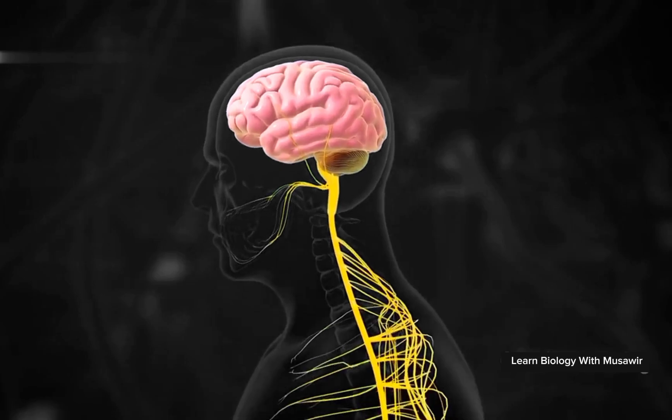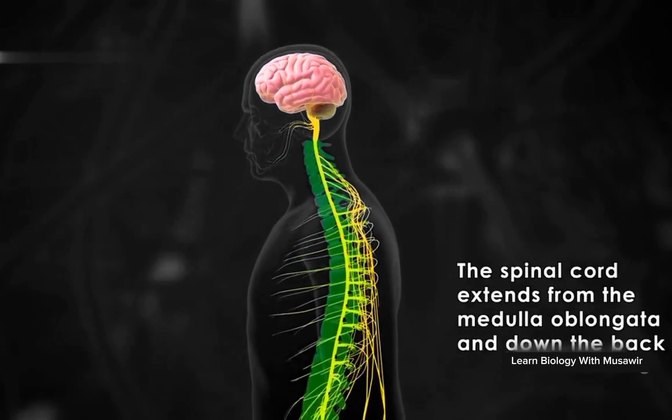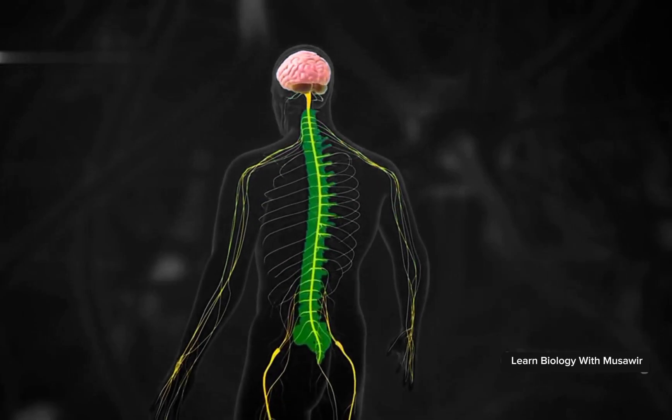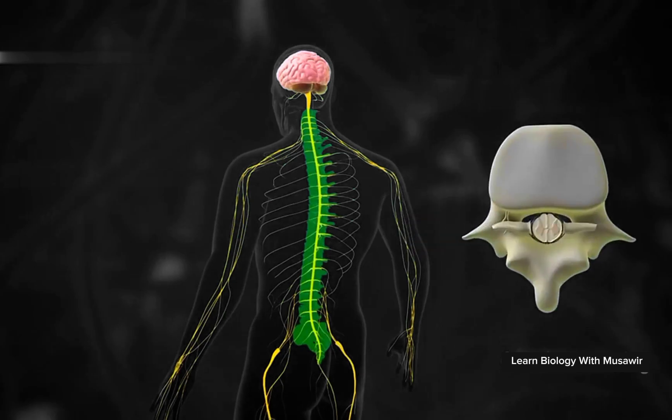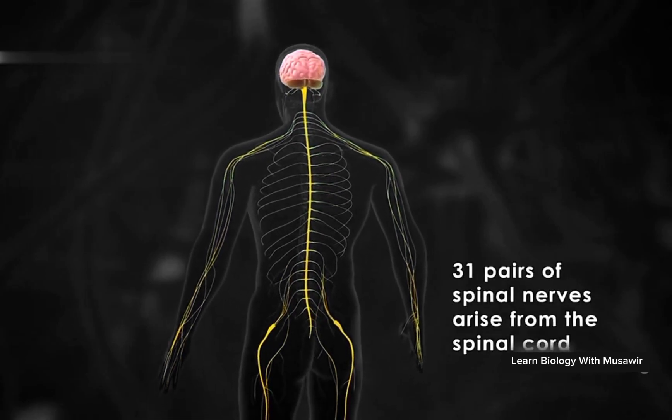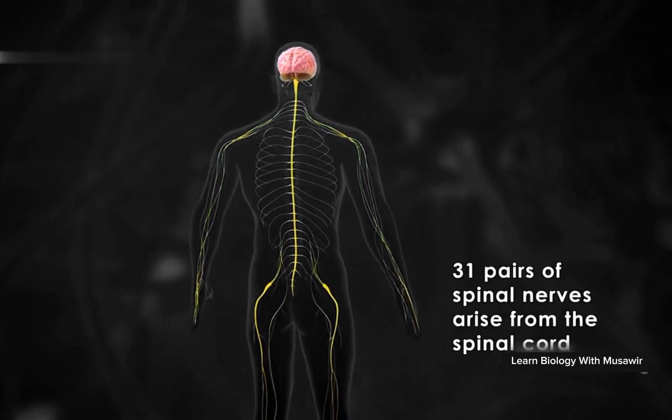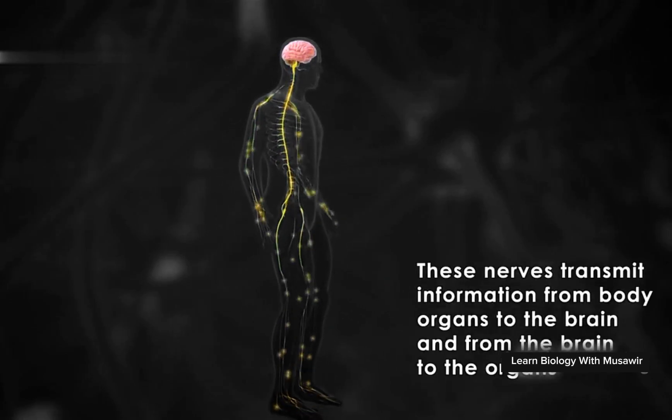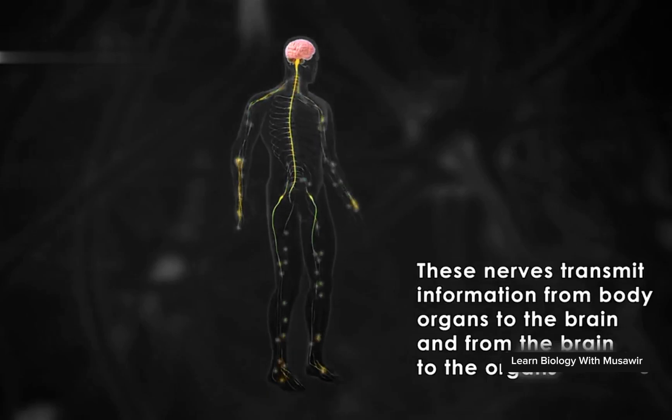The spinal cord extends from the medulla oblongata and down the back. It is protected by the vertebral column. The spinal cord is a hollow tube containing cerebrospinal fluid. Thirty-one pairs of spinal nerves arise from the spinal cord. These nerves transmit information from body organs to the brain and from the brain to the organs.